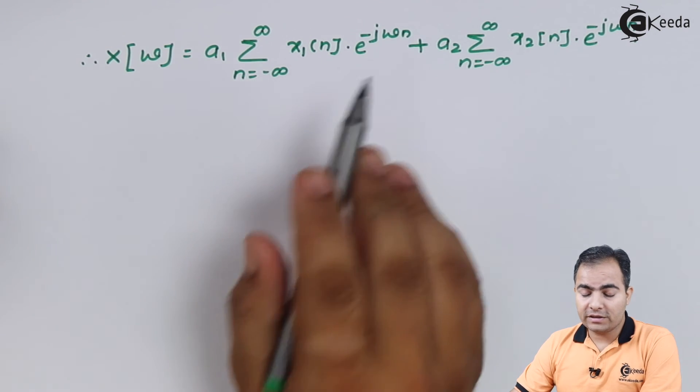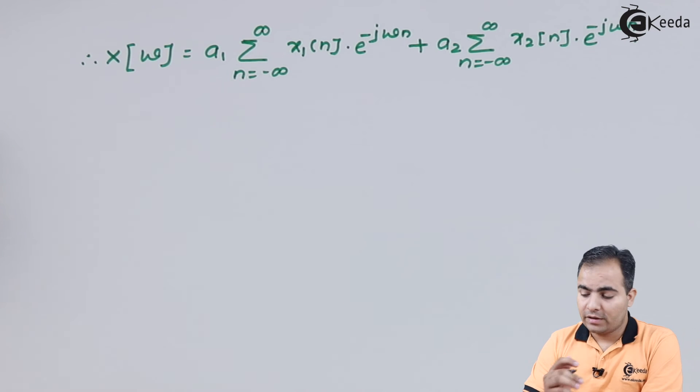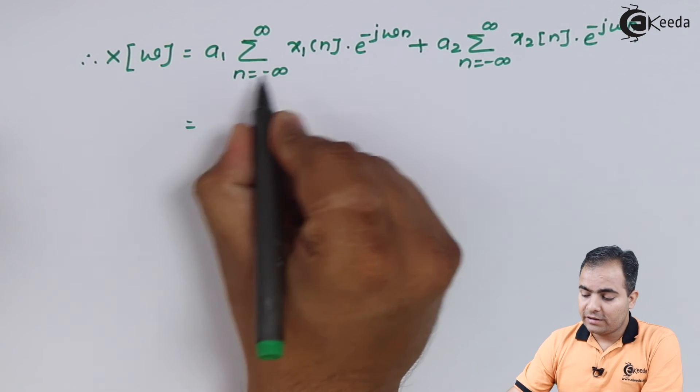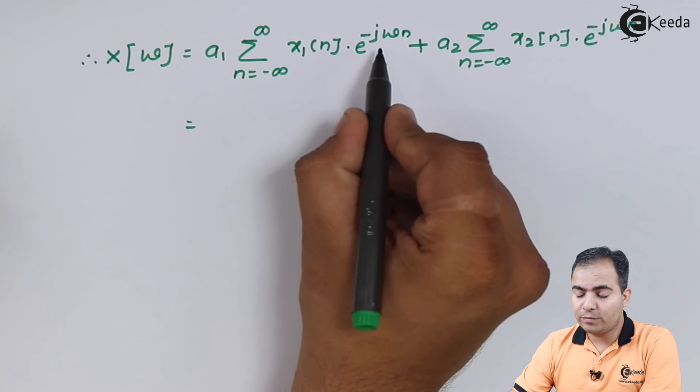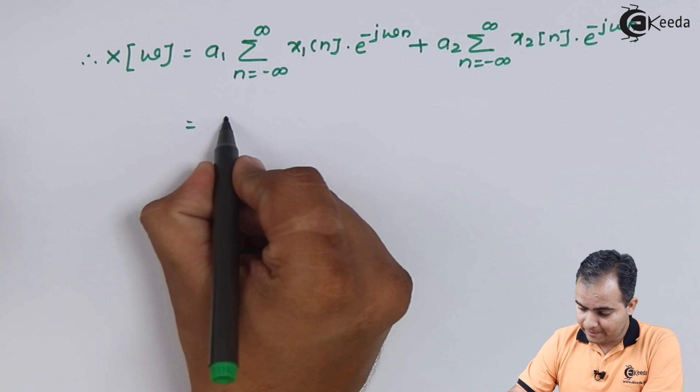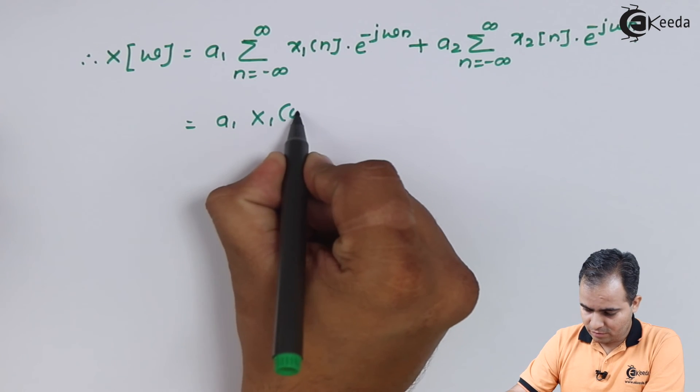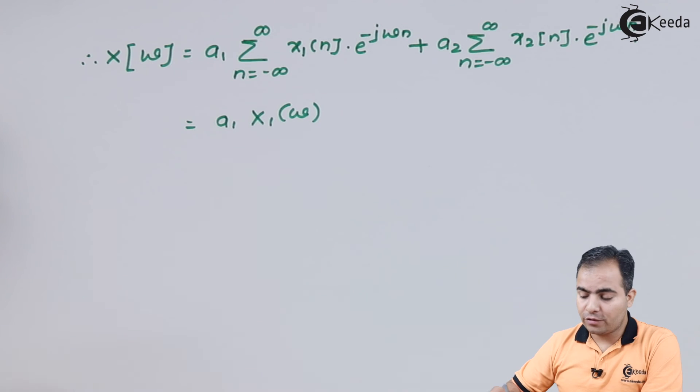This whole summation is in form of DTFT definition. So I am going to directly write the summation of n from minus infinity to infinity, x1[n]·e^(-jωn) as X1(ω).